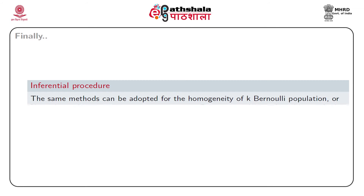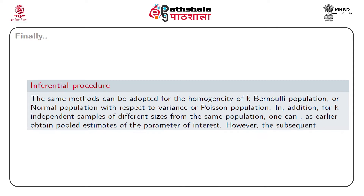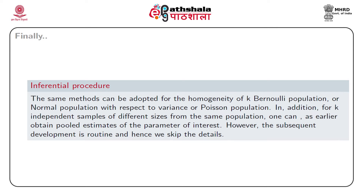The same methods can be adopted for the homogeneity of k Bernoulli populations, or normal populations with respect to variance, or Poisson populations. For k individual independent samples of different sizes from the same population, one can similarly obtain pooled estimates of the parameters of interest. It should be noted that if we want to test the homogeneity of k normal populations with respect to mean considering equal and unknown variances, the procedure is one-way analysis of variance. Whenever we have data from several normal populations with equal variances, large sample procedures are unnecessary as a good small sample procedure is available.